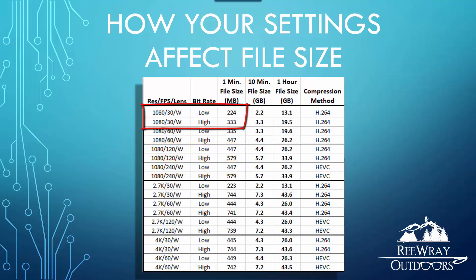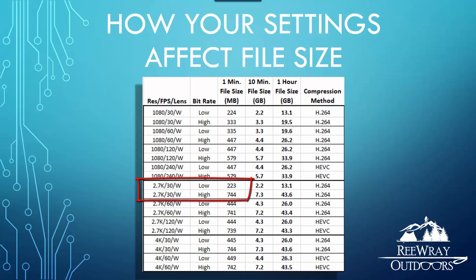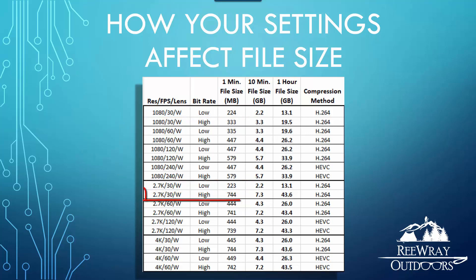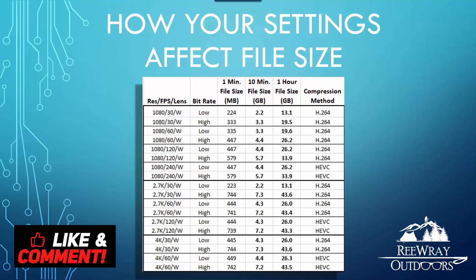Going from low to high bit rate will generally increase your file size by 30 to 50% for 1080p resolutions, and for both 2K and 4K the difference is about a 67% increase. A notable exception is 2.7K at 30 frames, which for some reason increases the file size by a whopping 233% over the same resolution at low bit rate. It's also interesting that 2.7K at 30 frames produces pretty much the same file sizes as 1080p at 30 frames, and 2.7K at 30 and 60 frames produce roughly the same file sizes at the high bit rate setting. I double and triple tested these results, so if anyone has insights or theories as to why these anomalies exist, please leave those in the comments below.